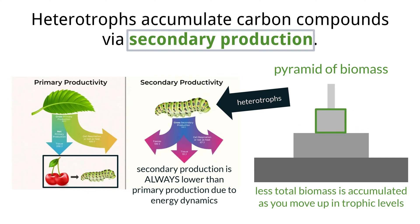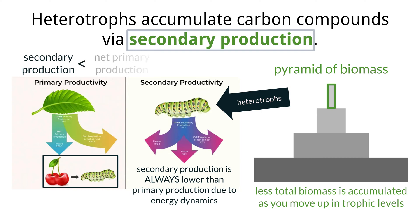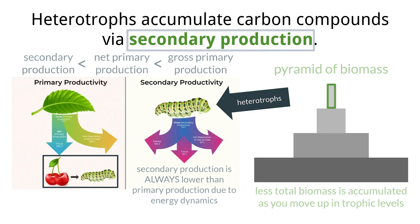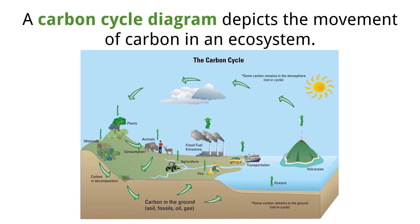Each trophic level will be able to accumulate less biomass due to energy restraints, as energy is used up through cell respiration, which itself results in the loss of carbon compounds that are broken down and consumed in the process. Remember that secondary production will always be lower than primary production, and net primary production is always lower than gross primary production.